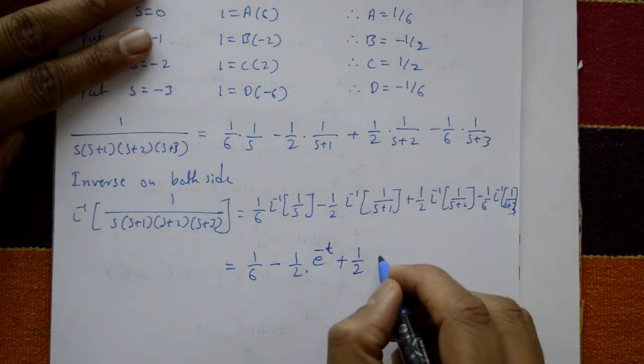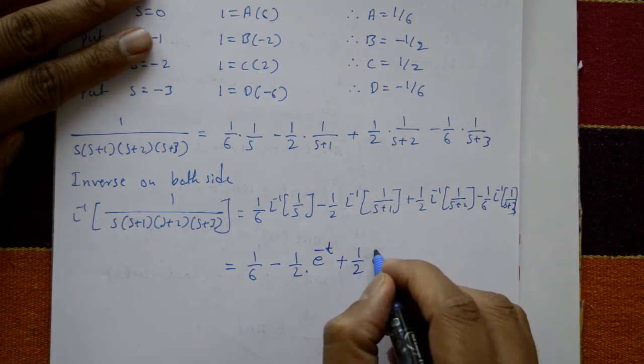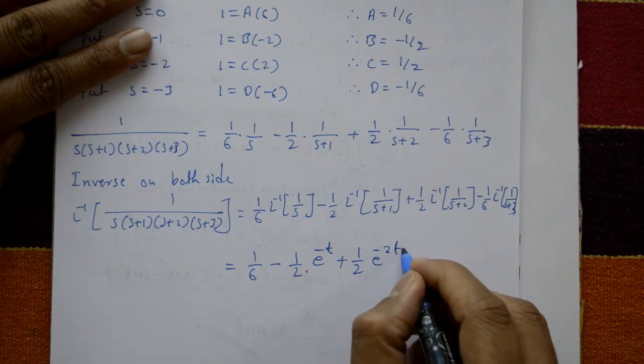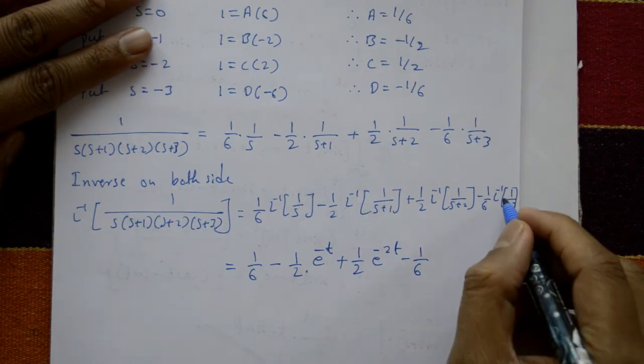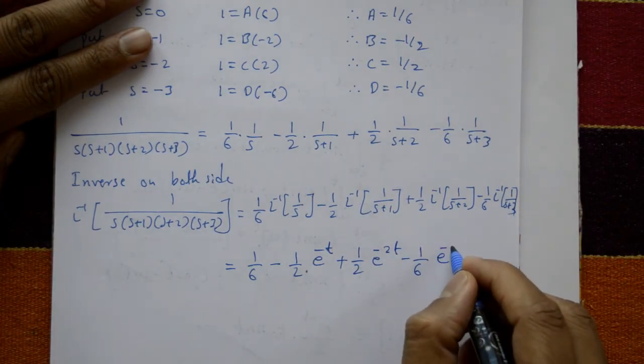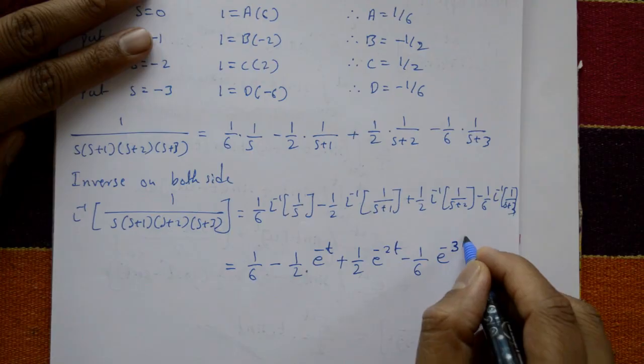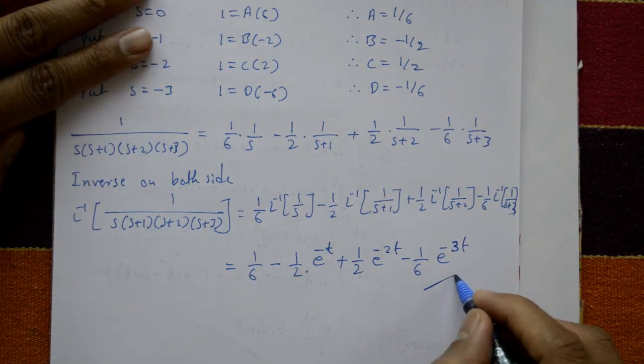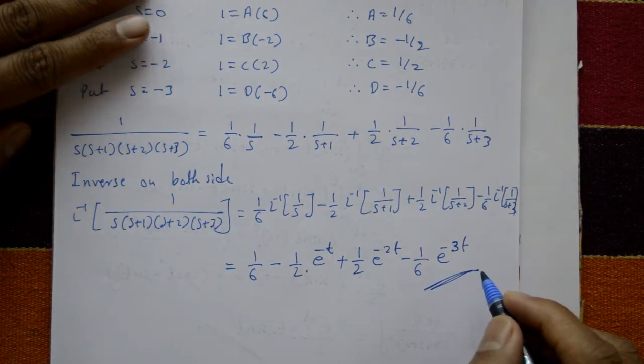Therefore the required solution is: 1 by 6 minus 1 by 2 e raised to minus t plus 1 by 2 e raised to minus 2t minus 1 by 6 e raised to minus 3t.